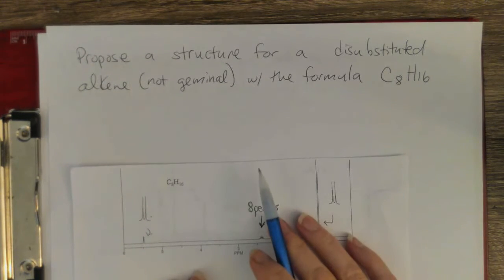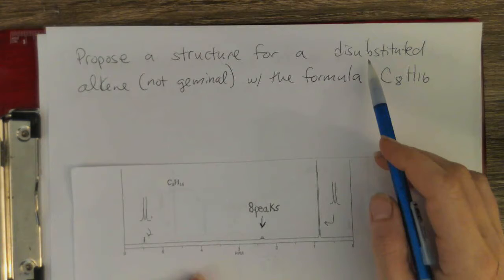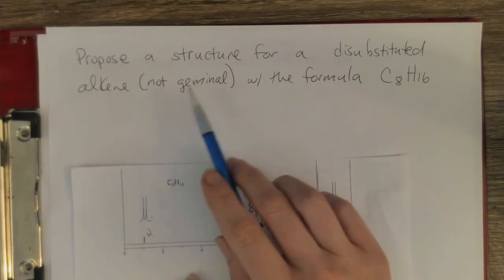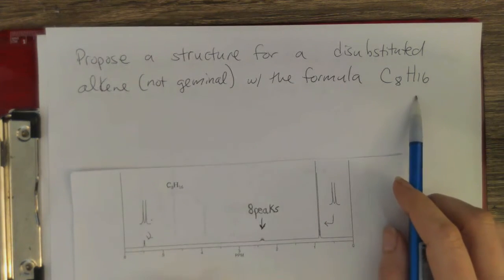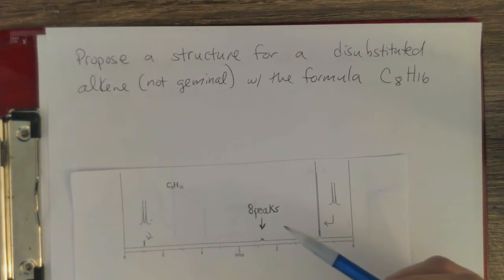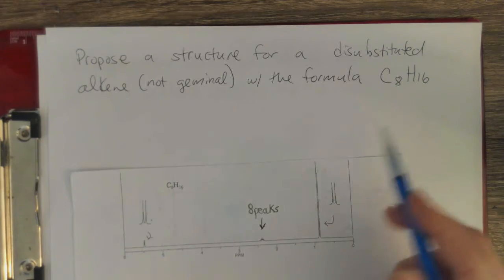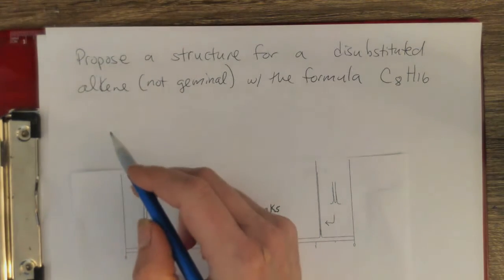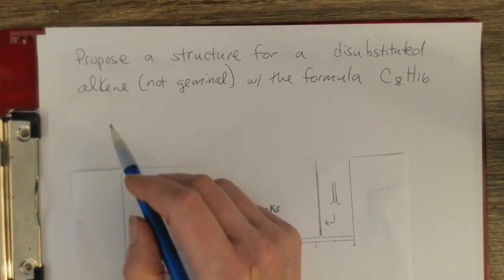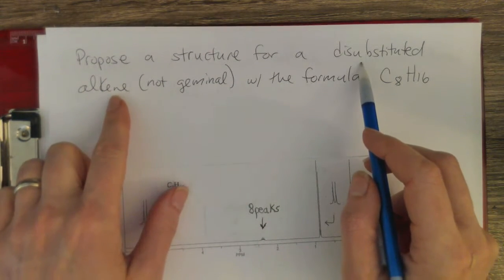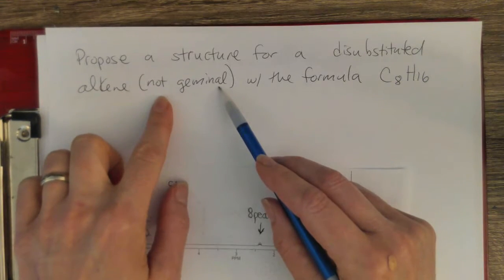Here we know that we have a disubstituted alkene that's not geminal and it has this formula. Going through the successive steps from the previous video, step zero is just what you're given — identify what a disubstituted alkene is that's not geminal.